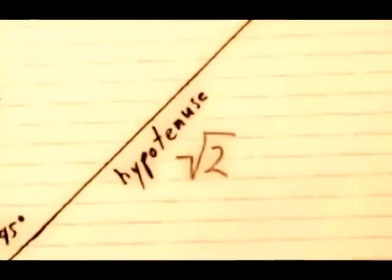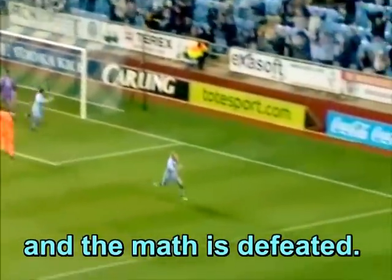Hypotenuse is root of 2. So you cross multiply again and the math is defeated.